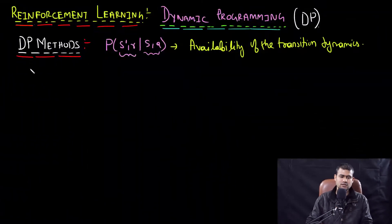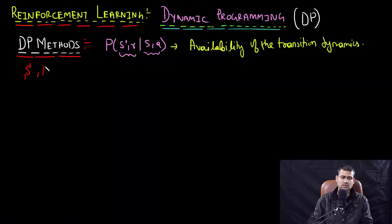Furthermore, DP methods assume that the MDP is finite — that is, the state set, the reward set, and the action set are all finite. In this part of the lecture we will learn dynamic programming methods, mostly focusing on computing the value functions and the use of value functions to compute the policies, which is what is typically done in the reinforcement learning field at large.